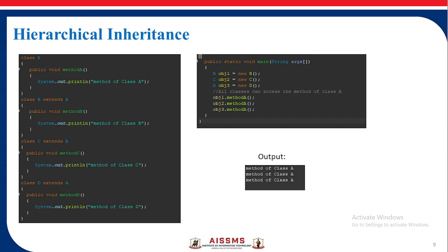Here is the example of hierarchical inheritance. Class A has a method methodA() with the statement 'method of class A'. Class B extends class A and has a method methodB() with the statement 'method of class B'. Class C extends class A with method methodC() and the statement 'method of class C'. Class D extends class A with method methodD() and statement 'method of class D'. When we create objects of classes B, C, and D and call method A, we get the output 'method of class A'.